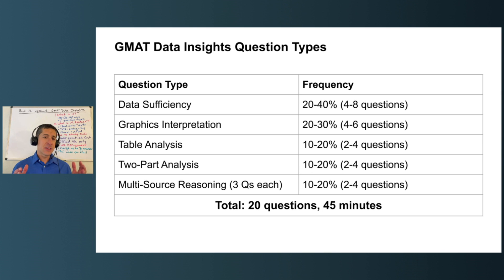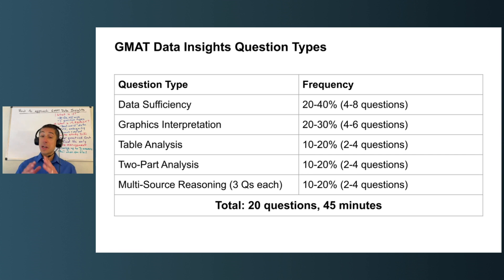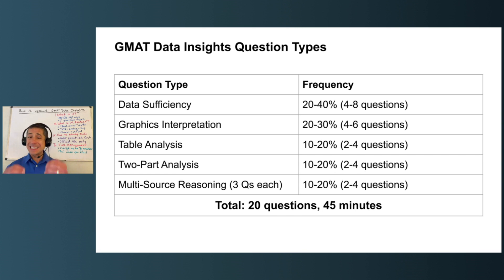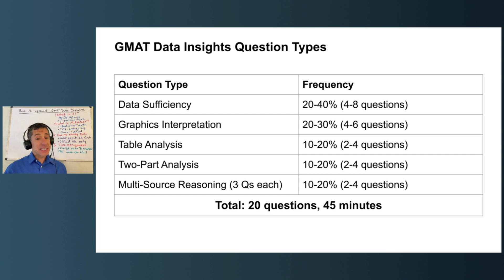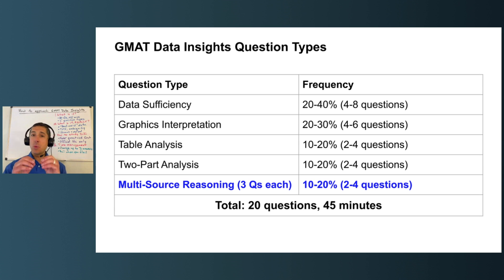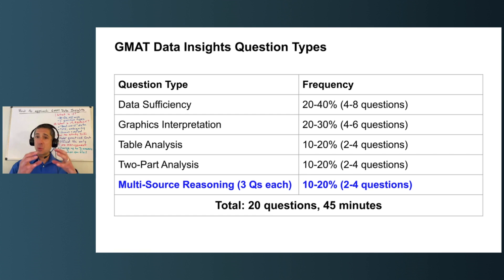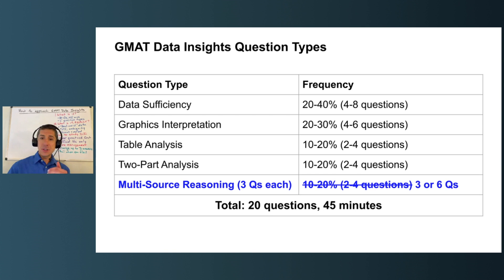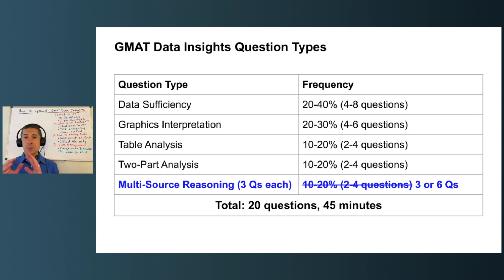Table analysis — kind of like Excel — you're going to see two to four of those. Two-part analysis could be anything; another two to four questions. And according to GMAT, multi-source reasoning — again, could be anything, generally some combination of data displays and text — they say two to four questions. In practice, that doesn't really make sense. Multi-source reasoning comes in three questions per set of information; they give you two or three tabs with charts, graphs, or text, and three questions attached. So in practice you're either going to see one set with three questions, or two sets with six questions.